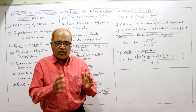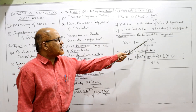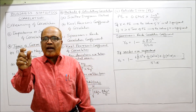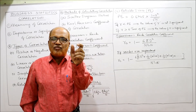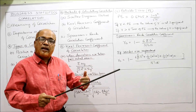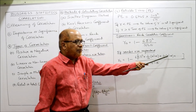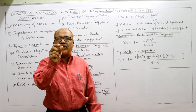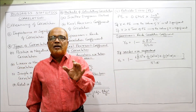In Spearman's rank correlation, there are two formulas. When ranks are not repeated and all ranks are unique, the formula is: RS = 1 − (6 × ΣD²) / (N³ − N), where D is the difference between the two ranks. The value ranges from minus 1 to plus 1, same interpretation as Karl Pearson. When ranks are repeated, a correction factor is added: RS = 1 − 6[ΣD² + (1/12)(m³ − m) + (1/12)(m³ − m) + ...] / (N³ − N), with one correction factor term added for each set of repeated ranks.